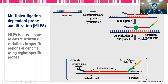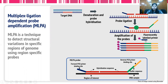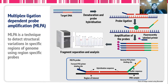After the ligation of the probe, amplification takes place using fluorescently labeled primers, so the right-hand side primer binding site becomes fluorescently labeled. After this, fragment analysis is undertaken wherein different probes bind to different regions of the selected target sequence, and the probe lengths will be different for different regions.